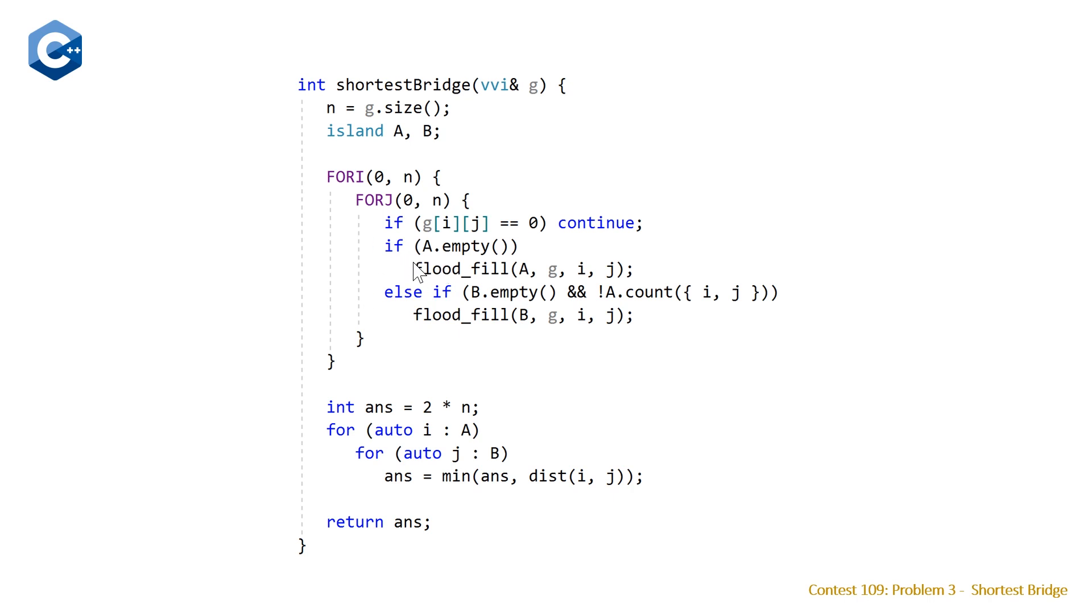Else, if we've already filled A, then we need to check that B is still empty to make sure that we're not already refilling B, and that the current element that we're at wasn't already discovered to be a part of the first island A. If we meet those two conditions, we can flood fill, pass in B, and perform the same one.